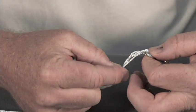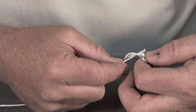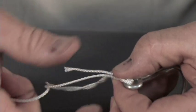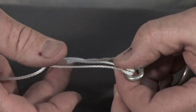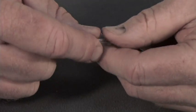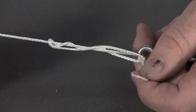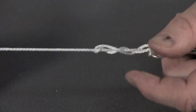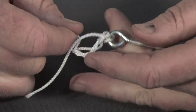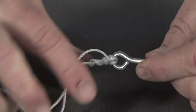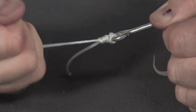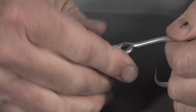Bring the tag end through the loop that's made where the line goes around the eye, and then bring that loop back through the loop you've made previously. Then hold it and pull on your main line.